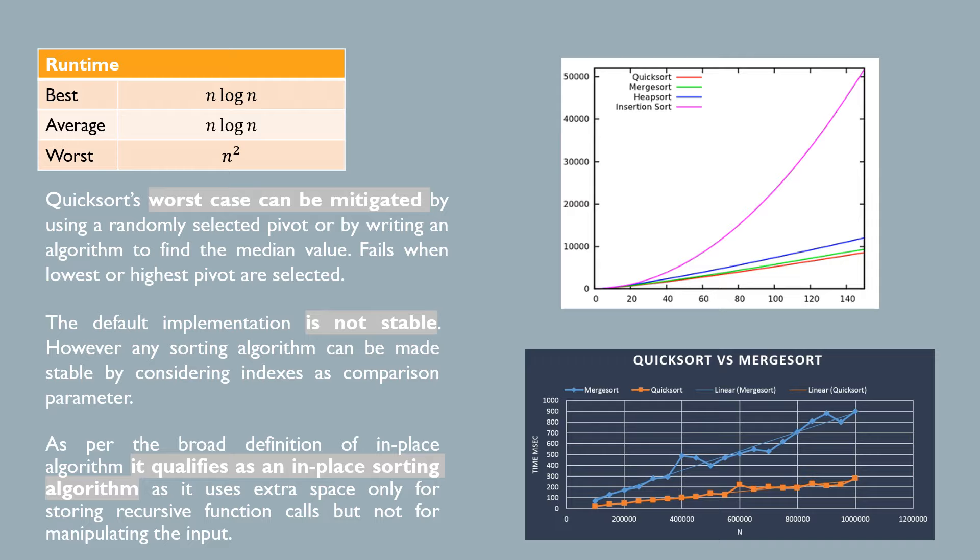Quicksort completes the best and average case in n log n time and the worst case in n squared time.